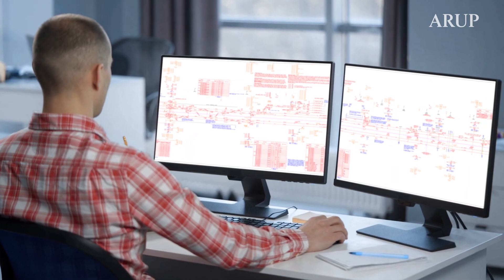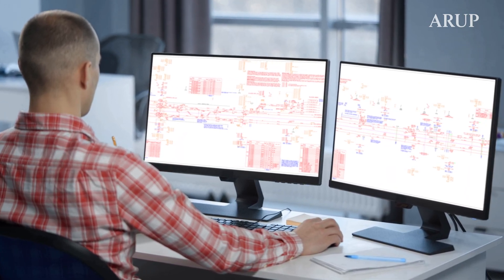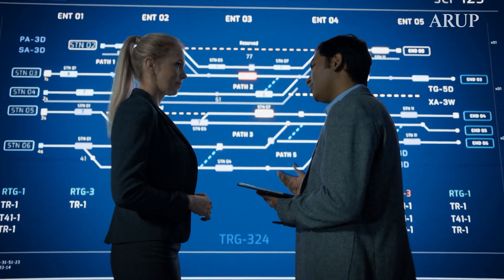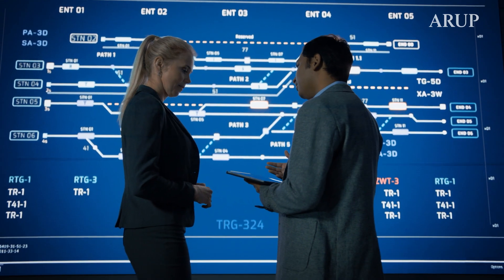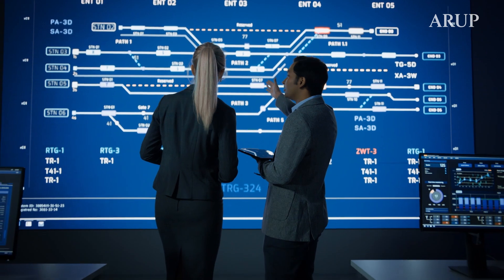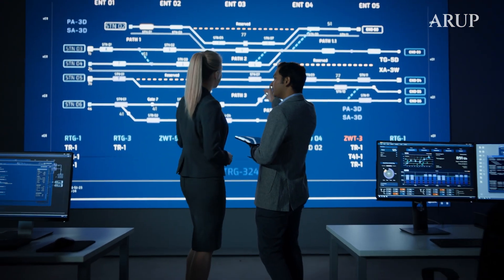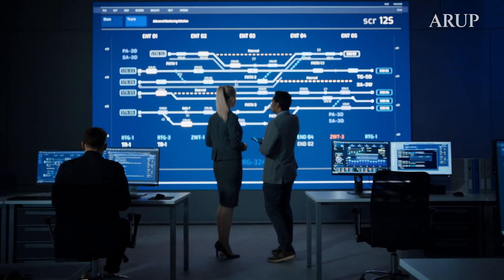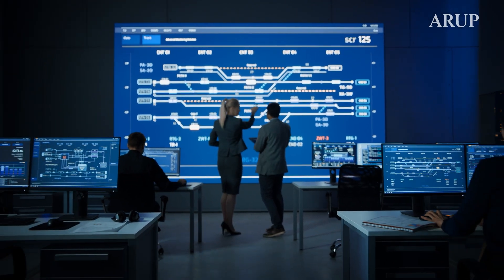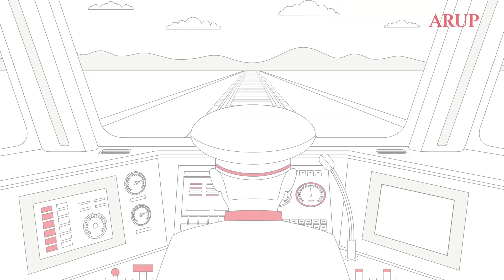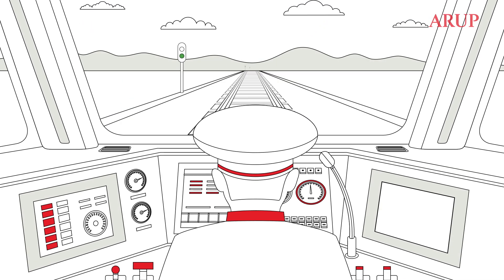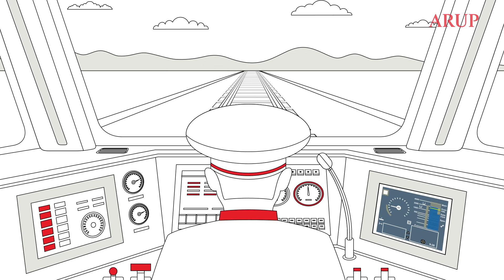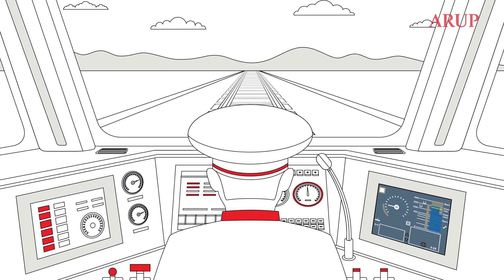Traditionally, design engineers produce schematic drawings of the physical signals located along the track. This process has relied on a set of technical rules and detailed reviews before railway owners and operators could agree on a signaling layout that is safe and efficient. But for many new and upgraded rail lines, the line-side signals are replaced by in-cab signaling systems.